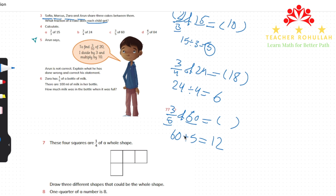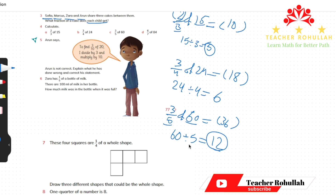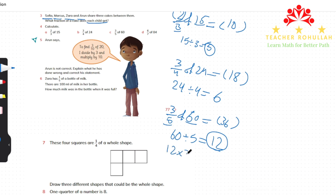60 divided by 5 gives each part as 12. We need three of those equal parts. 1 times 12 is 12, 2 times 12 is 24, and 3 times 12 is 36. So the answer for three-fifths of 60 is 36.